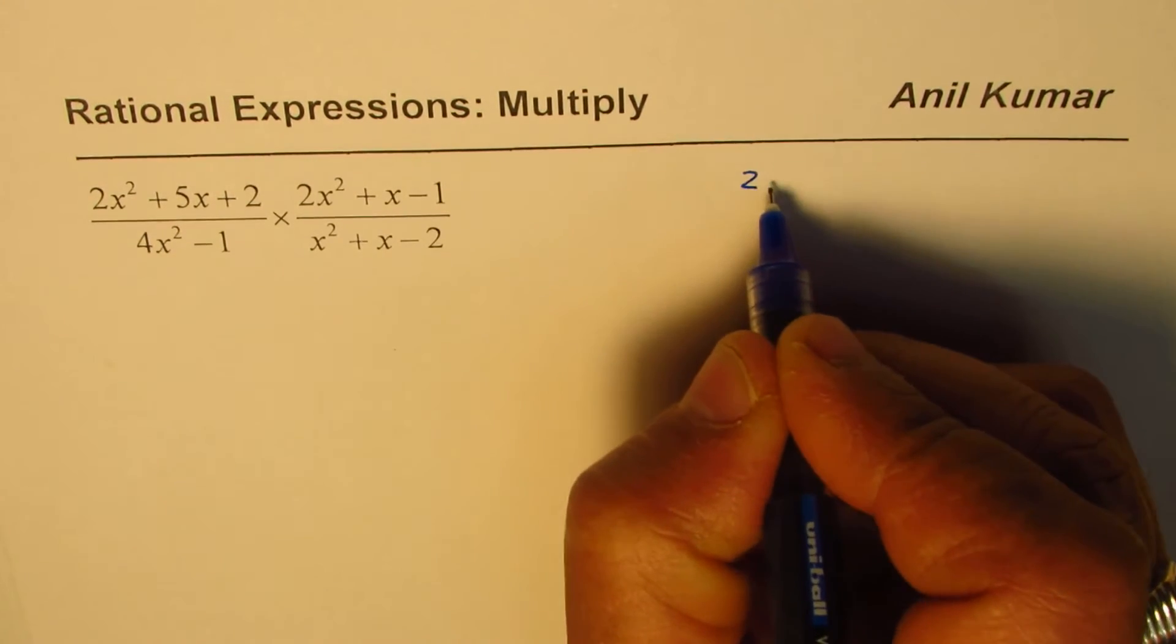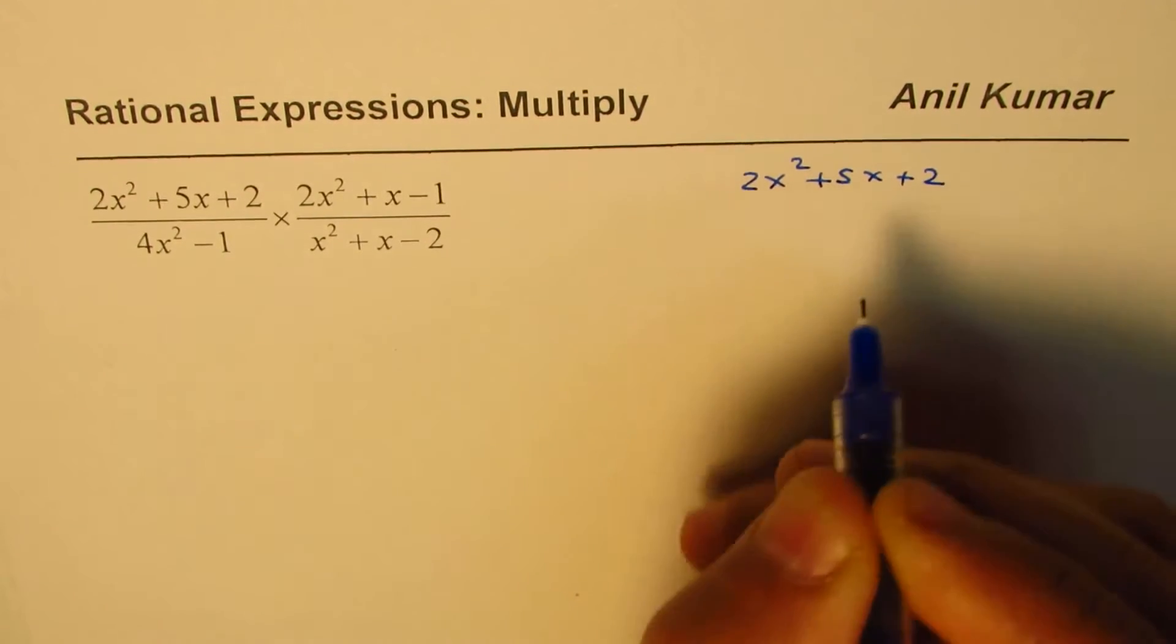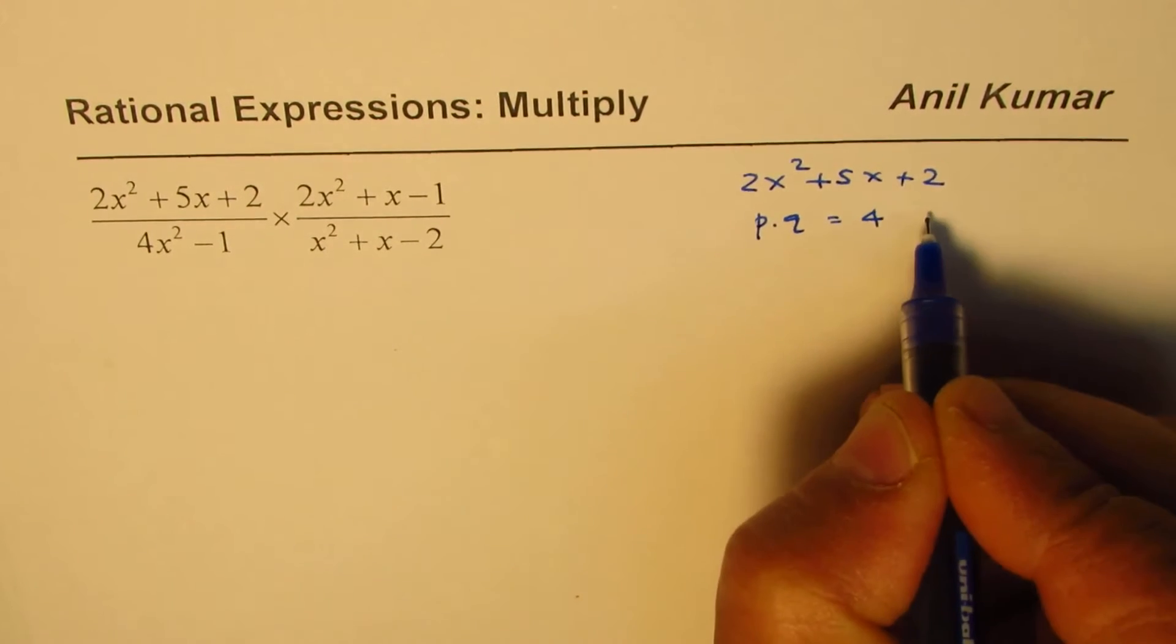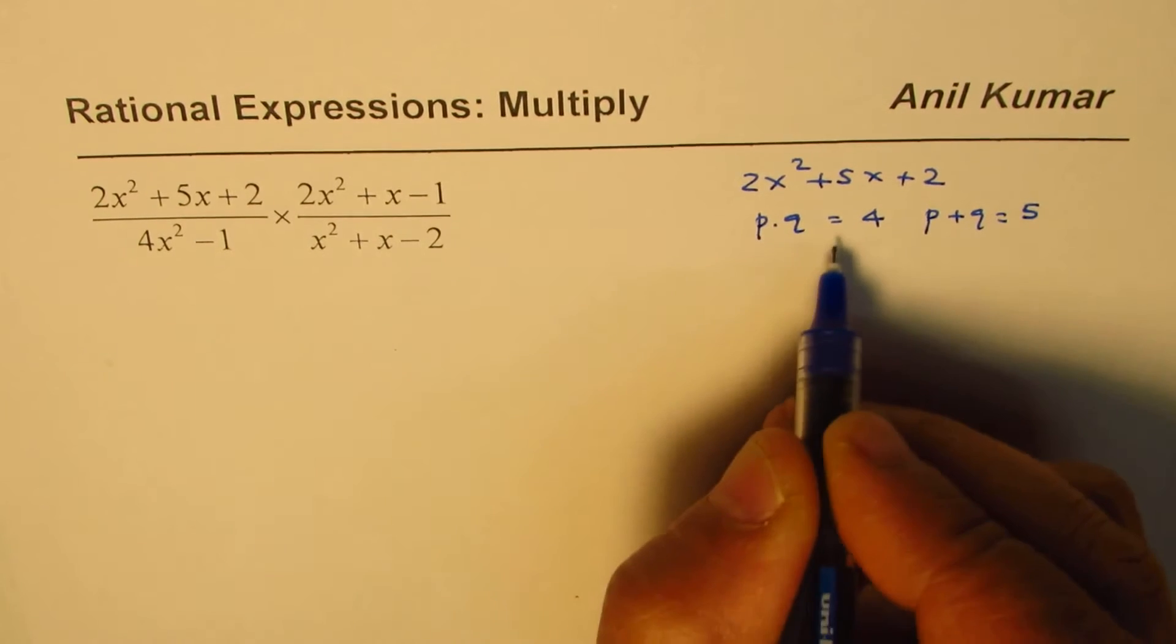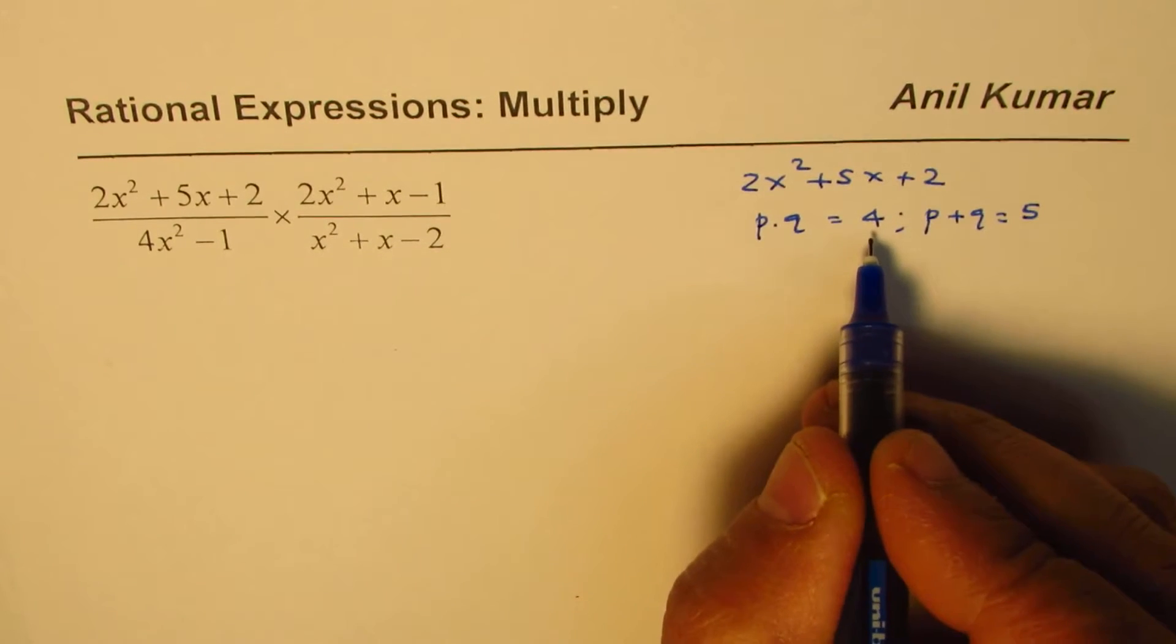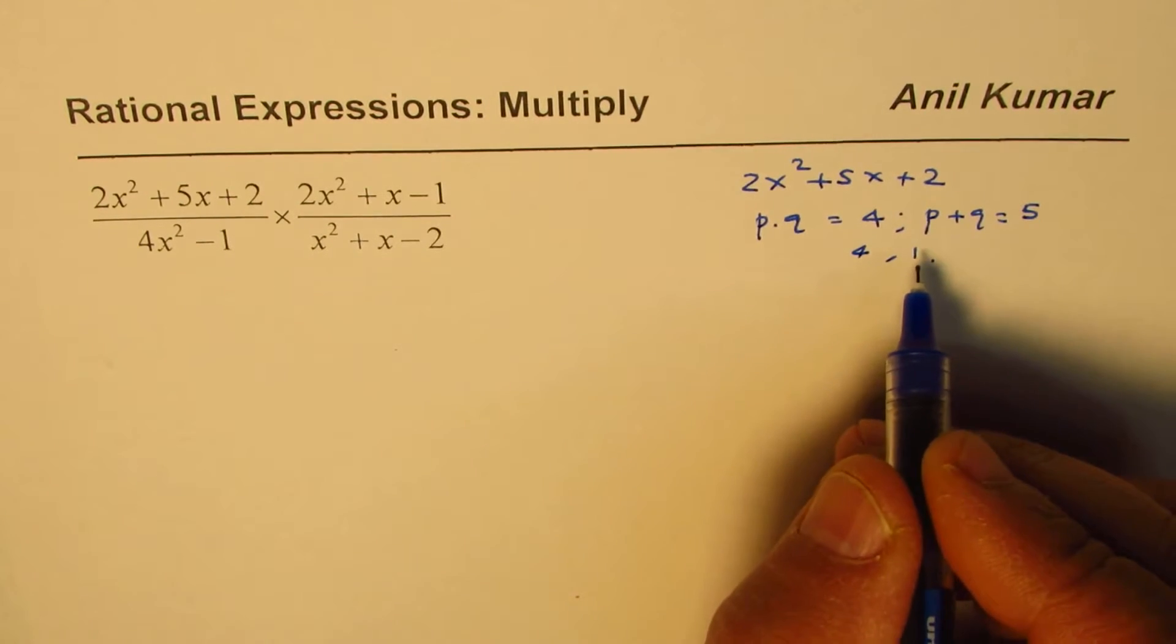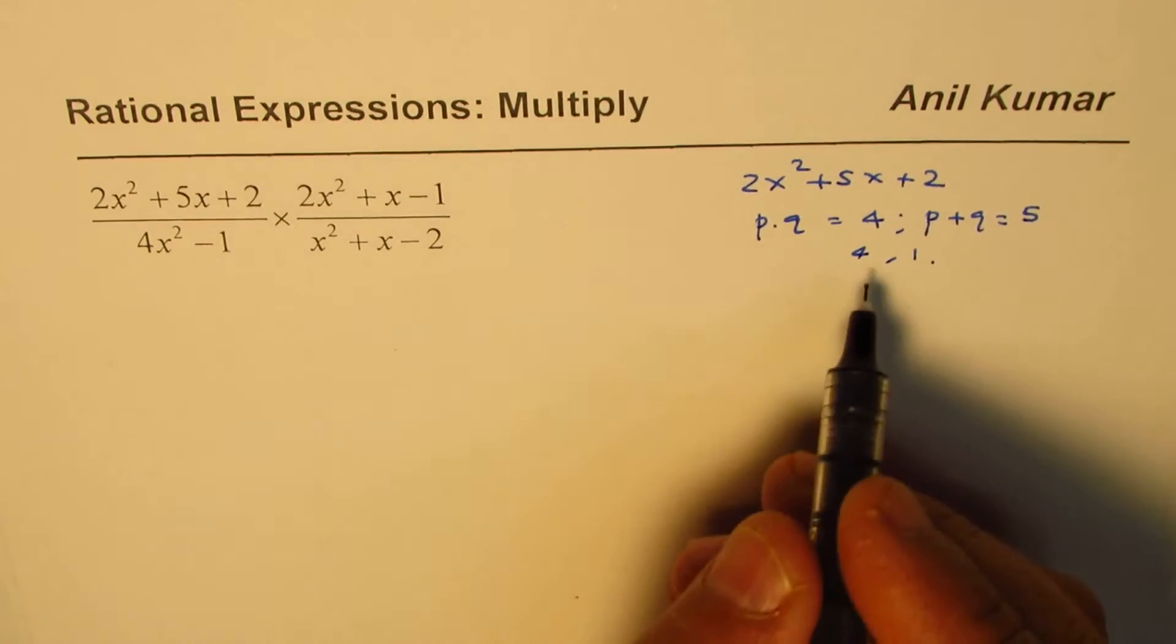Let us take 2x squared plus 5x plus 2. Now, we are looking for a product of two numbers p and q, 2 times 2 as 4, and their sum p plus q as 5. The two numbers are 4 and 1. So, 4 and 1 work for us.